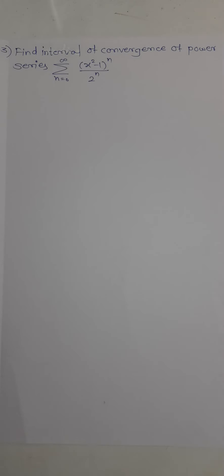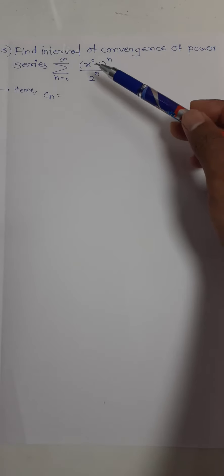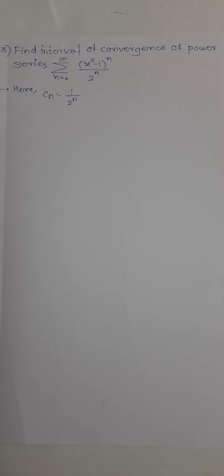First, I'll write cn, which is the coefficient of x raised to n. Here the series looks a little complicated, but don't worry. The coefficient is 1 upon 2 raised to n. For finding the radius of convergence, we need to calculate alpha first.